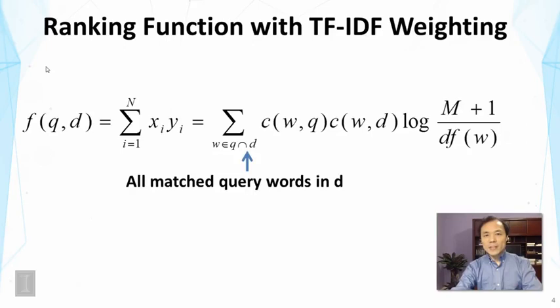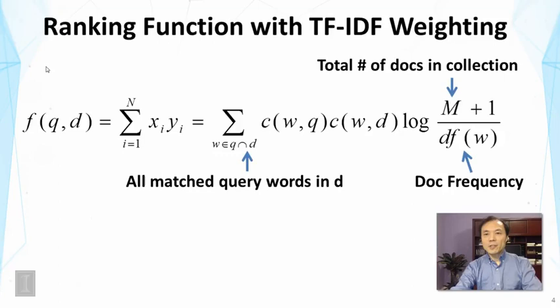And inside the sum, each matched query term has a particular weight, and this weight is TF-IDF weighting. So it has an IDF component where we see two variables. One is the total number of documents in the collection, and that is M. The other is the document frequency.